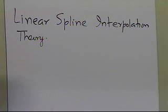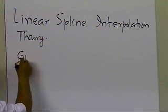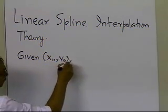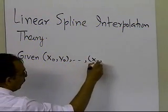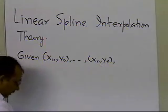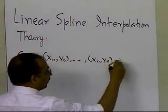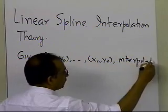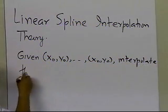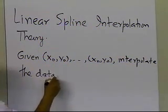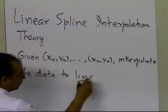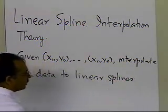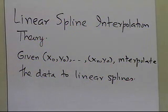The theory of linear spline interpolation is simple: somebody is giving you n plus 1 data points — x0 all the way up to xn and yn — and saying go ahead and interpolate the data to linear splines. So let's see how that can be done.